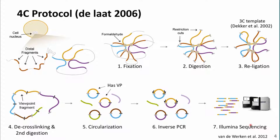Let's dive into 4C and see how this protocol works. Through formaldehyde fixation, restriction enzyme digestion, and re-ligation, we end up with the so-called 3C templates — the invention of Joab Decker in 2002. This structure holds fragments that were in close proximity within the cell nucleus at the time of fixation. 4C further takes these 3C templates and, by cross-linking and a second round of digestion, makes circularized DNA fragments. These can be enriched for circles containing our viewpoint, and then using inverse PCR, we create reads ready for Illumina sequencing.